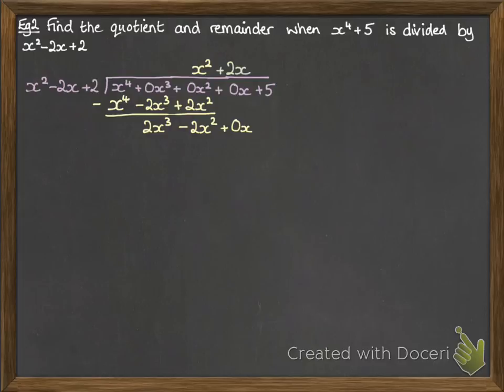That would be multiplied by 2x. So now if we multiply our divisor by all of that, then we get 2x cubed minus 4x squared plus 4x. We subtract it to find what's left. And we bring down the next column to carry it over onto there. So now what do we times x squared by to make 2x squared?